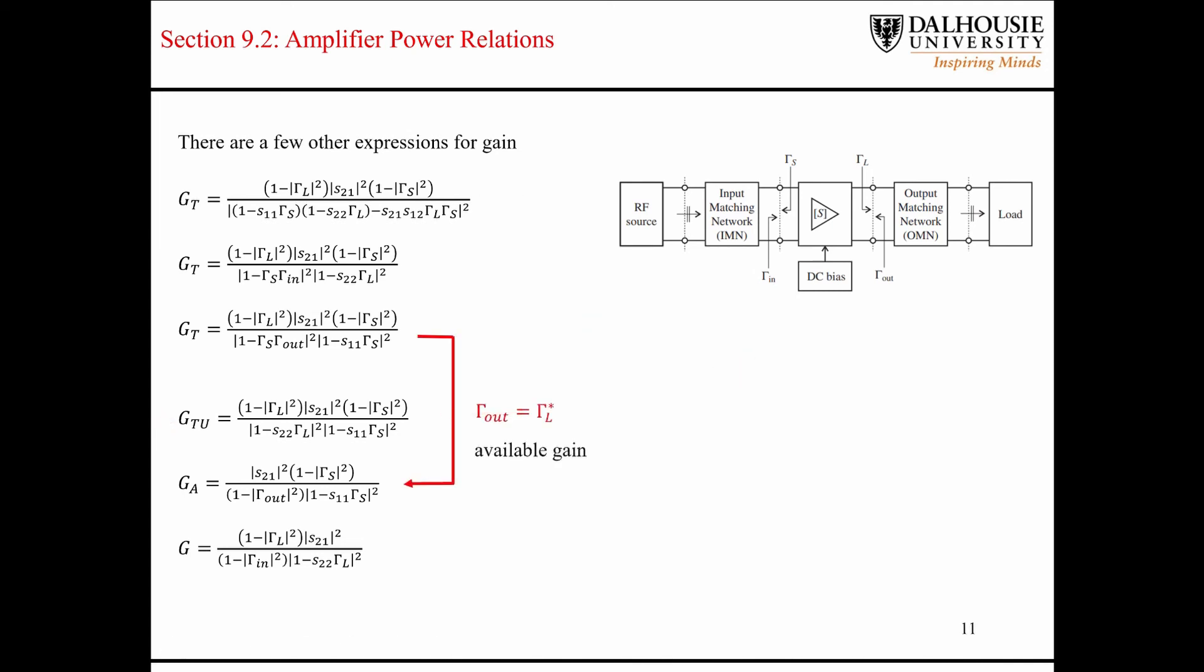The next expression for gain is what's known as the available power gain expression. It's derived from this expression for the transducer gain, where we assume that the output of the transistor is perfectly matched to the load. And if you make that substitution and do a little bit of simplification, then you end up with this expression for the available power gain here.